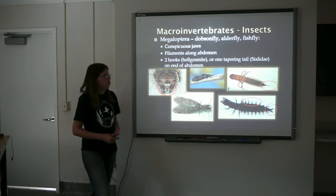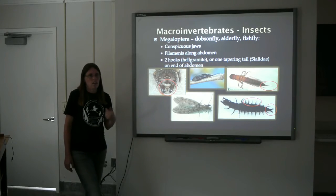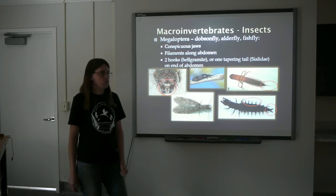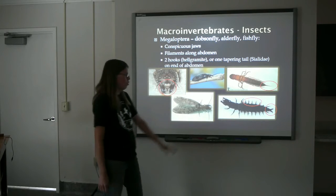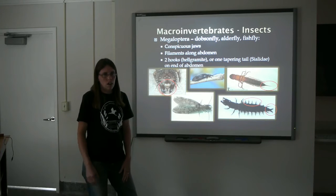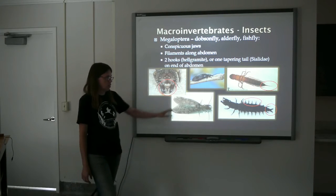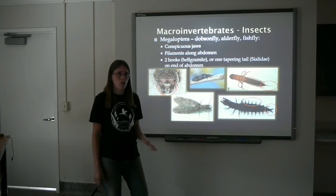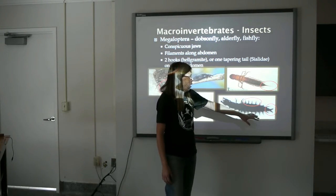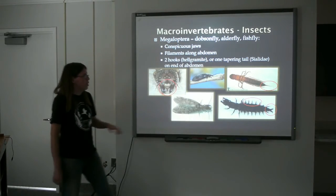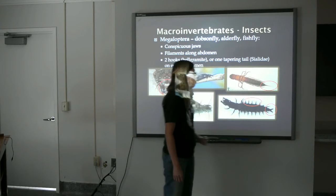Megaloptera is an interesting family — it only has two genera in it. These are the dobsonflies, the alderflies, and fishflies. This is what most people refer to as a helgramite. These guys get pretty big — they might get four inches long — and they have very powerful jaws. The helgramite is usually found in good, clean water with a rocky substrate. They need good oxygen levels, but they can actually withstand the stream drying out; they can live under rocks on the edge of the stream for a limited amount of time. They have large jaws and filaments on the side of the abdomen. The helgramite will have two hooks on the tail that they use to hold themselves down in the current, and the alderfly larvae will have one pointed central filament.